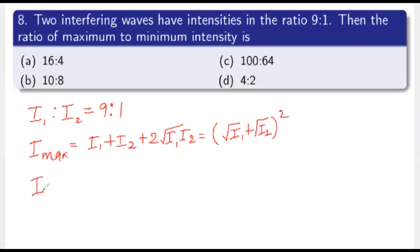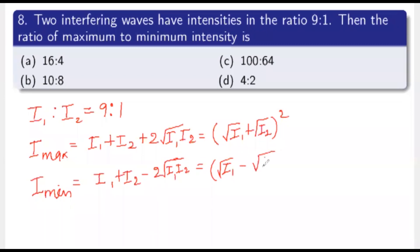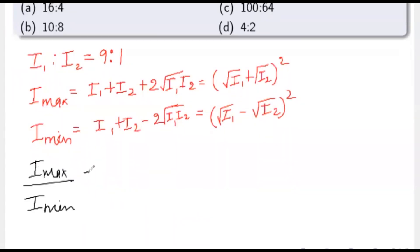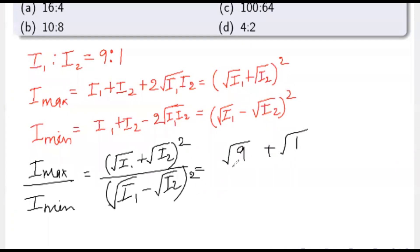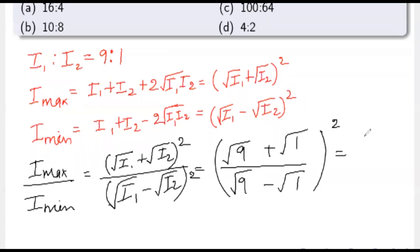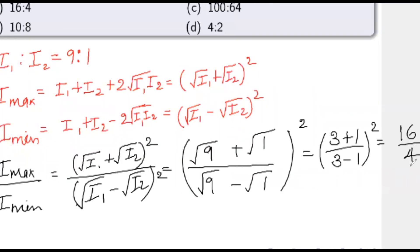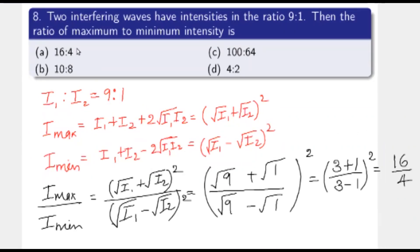The minimum intensity is I_min = I1 + I2 - 2√(I1·I2) = (√I1 - √I2)². The ratio I_max/I_min = (√I1 + √I2)²/(√I1 - √I2)². Substituting: (√9 + √1)²/(√9 - √1)² = (3+1)²/(3-1)² = 16/4. So the ratio is 16:4 — first option is correct.